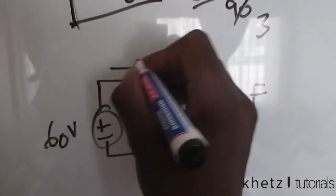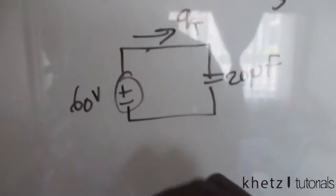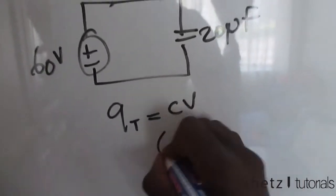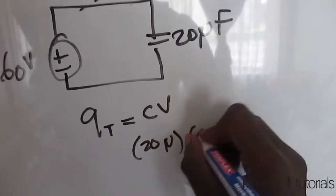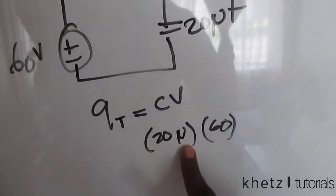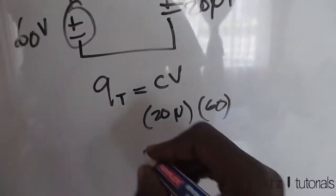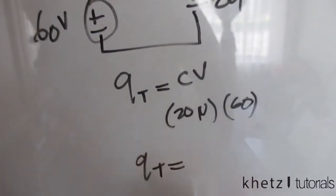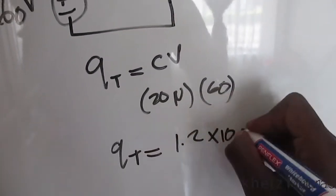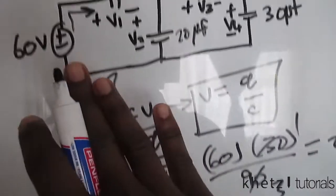Now we can find the total charge. Qt equals C times V. C is 20 microfarads and V is 60 volts as given in the question. Punching that into the calculator: 20 times 10 to the minus 6 times 60 gives a total charge of 1.2 times 10 to the minus 3 coulombs. This is the total charge supplied to the rest of the circuit.